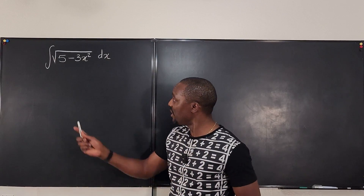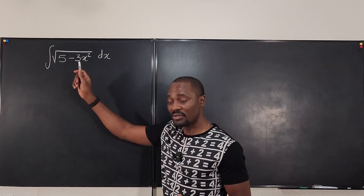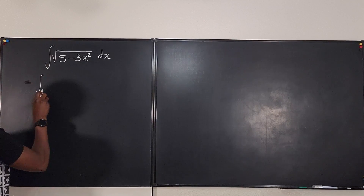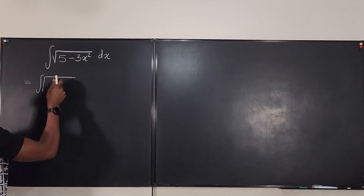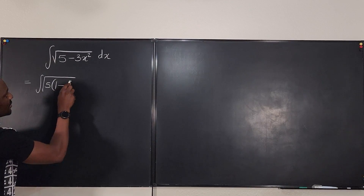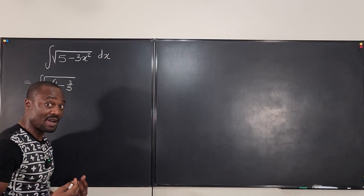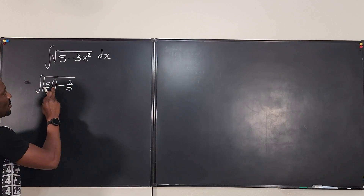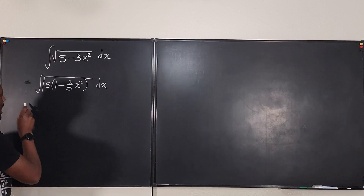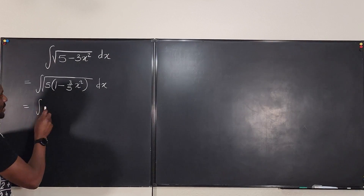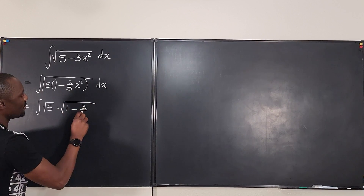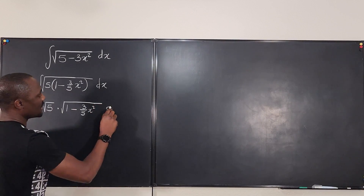Essentially, the first thing you want to do is make sure that there is a one here so you can do your trig substitution for sine theta. I'm going to say that this is equal to the integral of the square root — instead of writing this 5 like this, I'm going to write 5 on the outside and factor it out. So there is 1 minus 3 over 5 x squared. When you factor, you're dividing by 5, so dividing by 5 gives 1 and 3 over 5. dx.